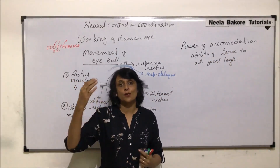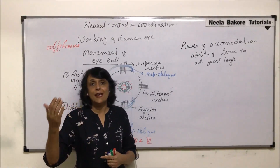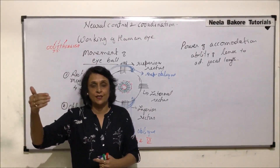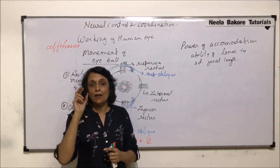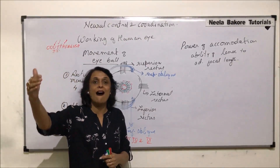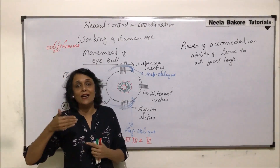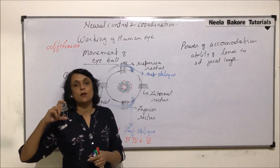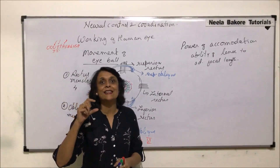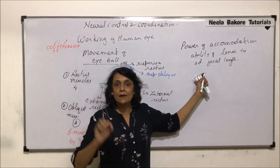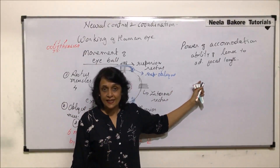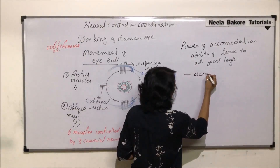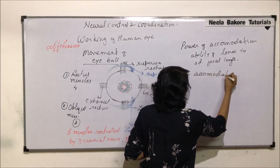When we see objects from a distance or objects which are closer, we are able to keep them in focus. If a car is coming from a distance, our lens focuses it. As it comes closer, we still see a clear image because the focal length is adjusted every time so that a sharp image is always formed on the retina. This is the power of accommodation.